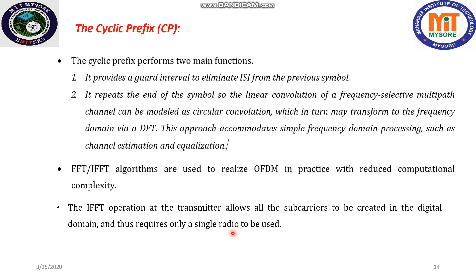The next important topic is the cyclic prefix in OFDM. The cyclic prefix means we are going to add a number of redundant samples or bits into the OFDM symbol at the beginning. These are nothing but the bits at the end of the OFDM symbol. It provides a guard interval to eliminate ISI from the previous symbol, and repeats the end of the symbol so that linear convolution of a frequency-selective multipath channel can be modeled as circular convolution, which can be transformed to the frequency domain via DFT. This allows simple frequency domain processing such as channel estimation and equalization.